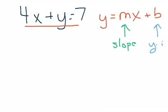So let's rearrange this equation of 4X plus Y equals 7 into the slope form, okay? So we do that by first getting Y all alone.